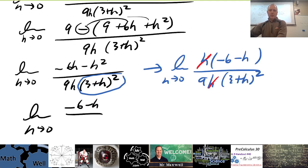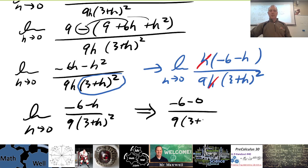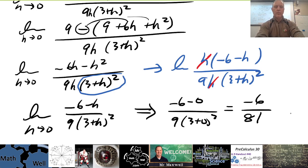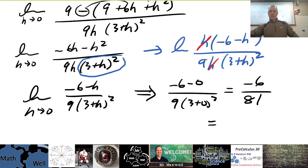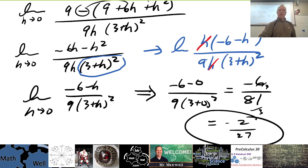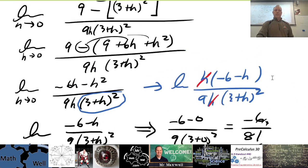Negative 6 minus h, all over 9 times this. And when you go ahead and substitute, when you let h approach 0, this becomes negative 6 minus 0. This becomes 9 times 3 plus 0 squared. So that's going to be negative 6 on top, and then 9 times 9 is 81. So now we'll double check all my work here. So the only other thing we'd want to do is simplify this. You can divide 3. So it'd be negative 2 over 27 is your final answer. So we did everything correct up to that point.